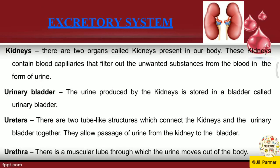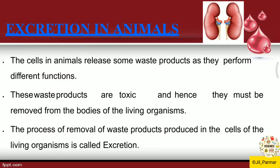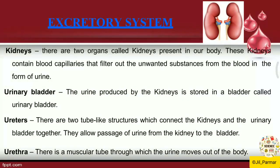The last one is the urethra. The urethra is a muscular tube through which urine moves out of the body. As shown in the image with an arrow at the last point, urethra is the muscular part from which urine exits the body. So urethra is nothing else but the muscular part from which urine is removed from your body.